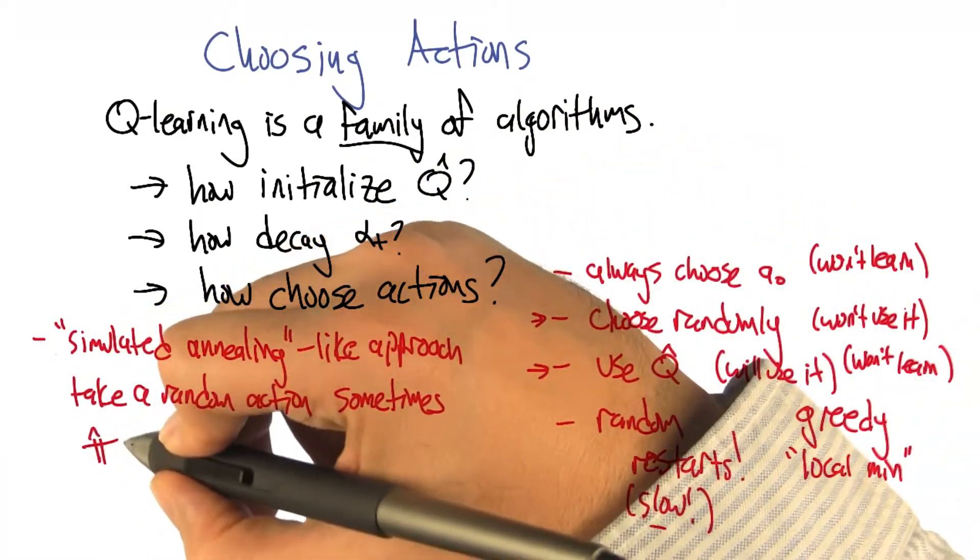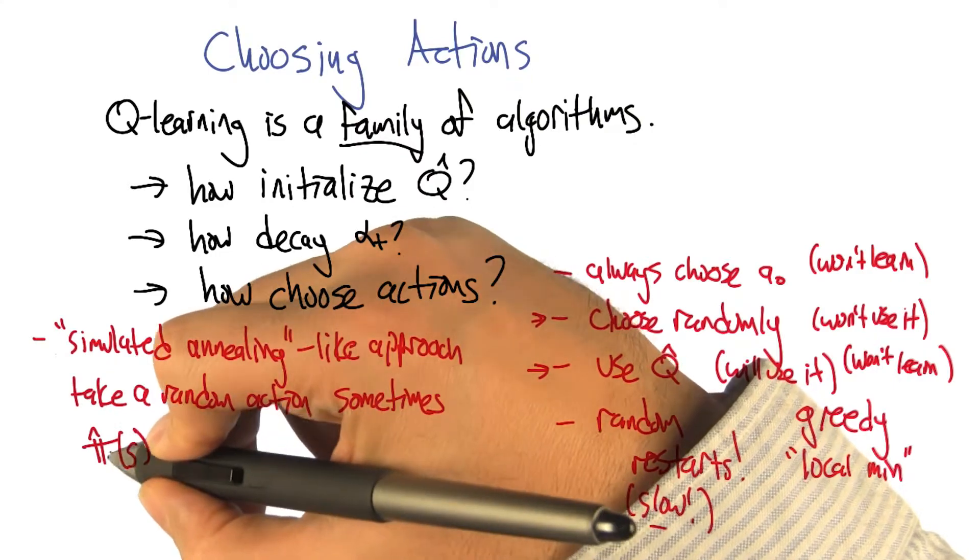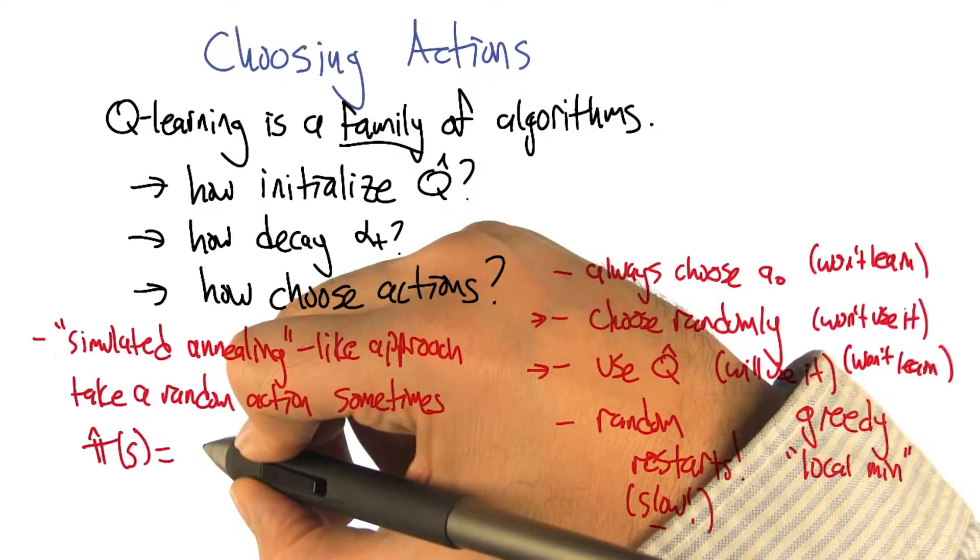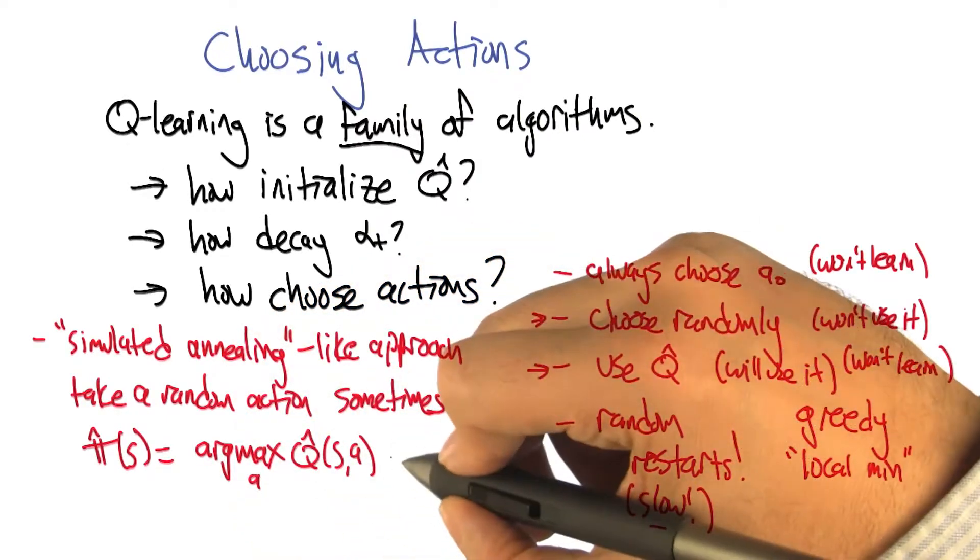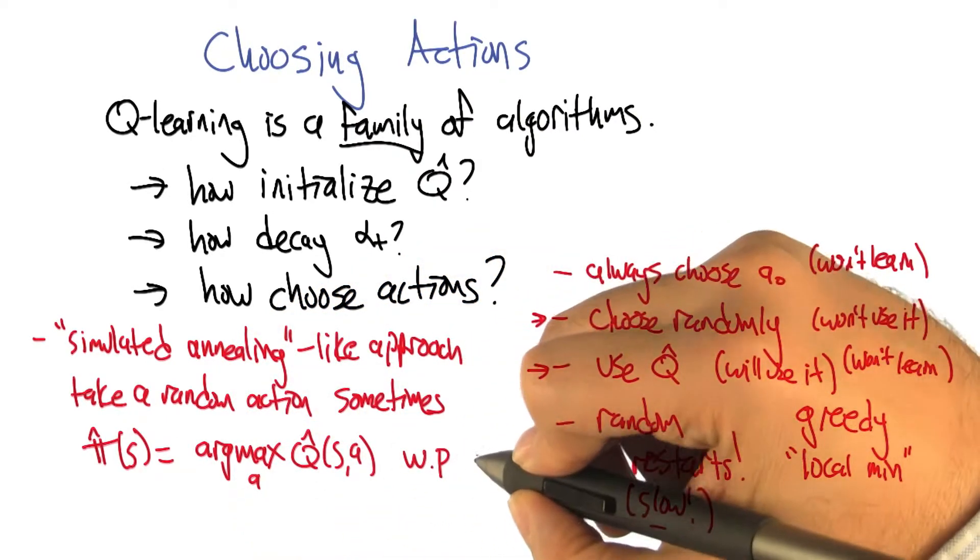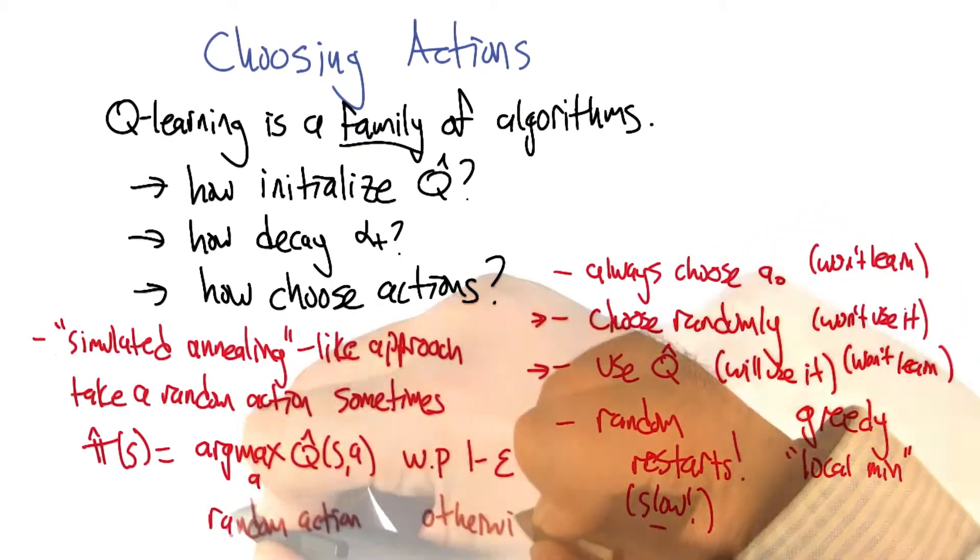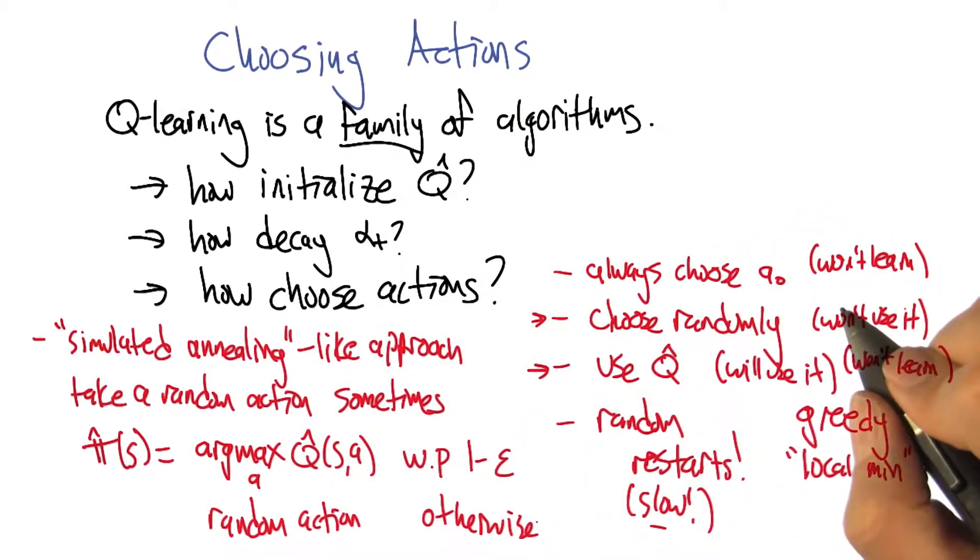So then our exploration policy, our approximate policy is going to be to, when we're in state S, figure out the best action in that state according to our estimate and take that with probability, I don't know, let's say 1 minus epsilon. And otherwise take a random action and see what happens.